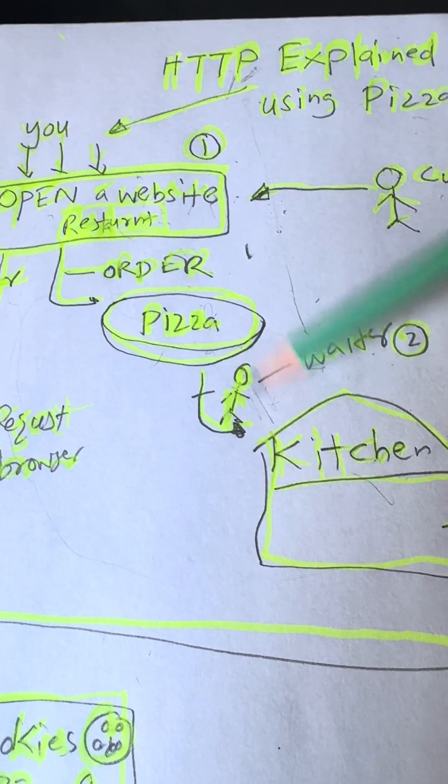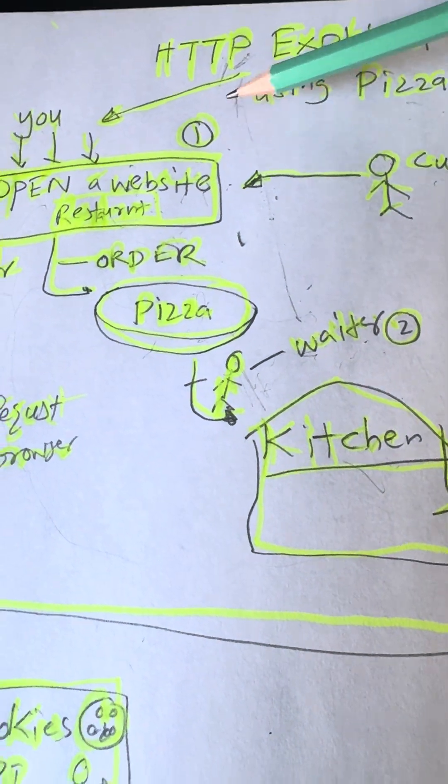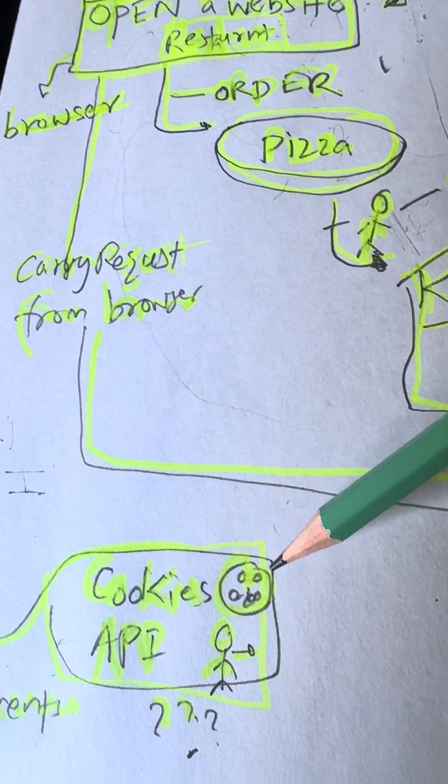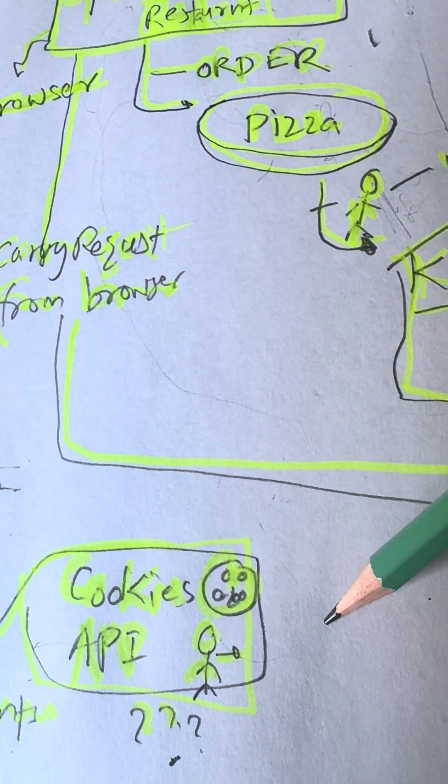Now tell me in the comments, should I explain cookies or API next?